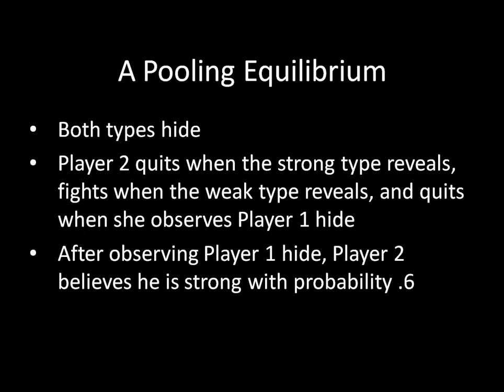That means we have a pooling equilibrium. In that equilibrium, both types of Player 1 — strong and weak — choose to hide. For a perfect Bayesian equilibrium, we need strategies both on and off the equilibrium path. Player 2 is going to quit when the strong type reveals — that's off the path, because on the path Player 1 is hiding and never reveals information, whether he is the strong or the weak type.